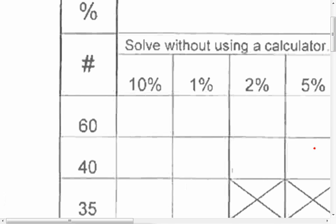Let's start first, start off and write some rules. 10% means you move it, remember, one space. One space. And 1% was two spaces.